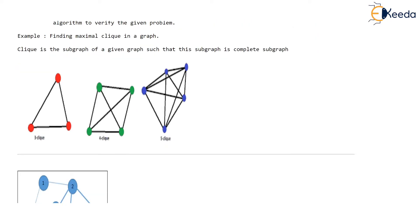Let's see an example now. Prove that the clique problem of a graph is NP-complete. The clique problem is a very famous problem. Now, what is this clique problem? Clique is a problem on graphs and we want to find out the maximum clique in the graph. Let's first see what a clique is.